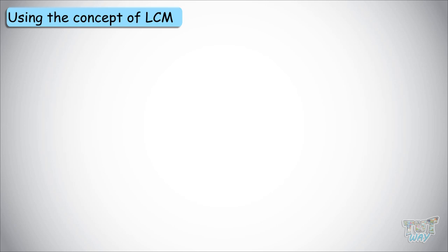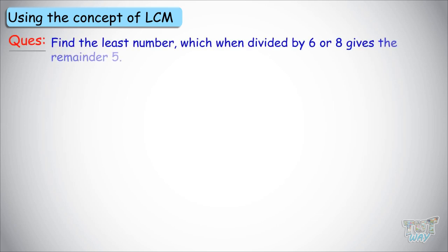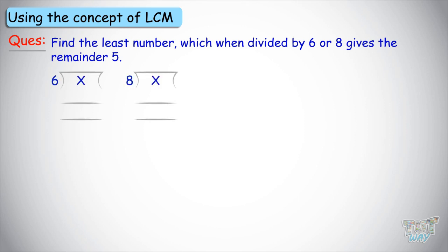Here we have some questions. We have to find the least number which, when divided by 6 or 8, gives the remainder 5. The question is: find the lowest number which, when divided by 6 or 8, gives a remainder of 5.